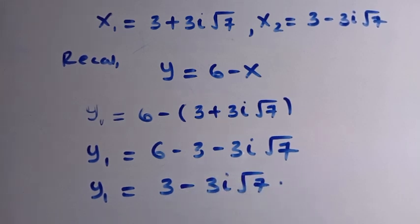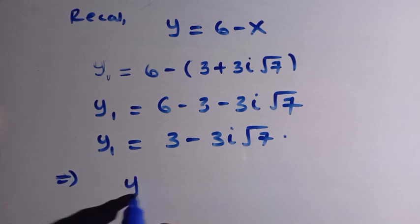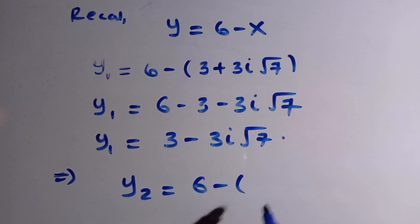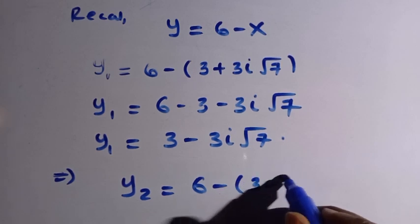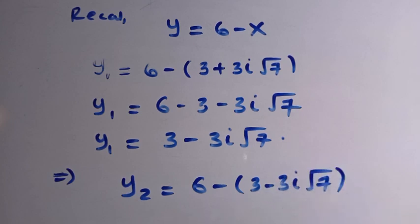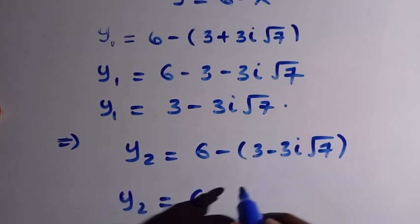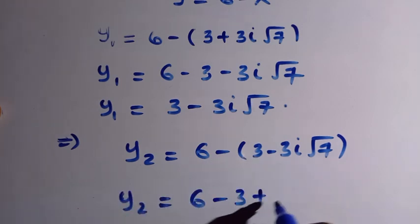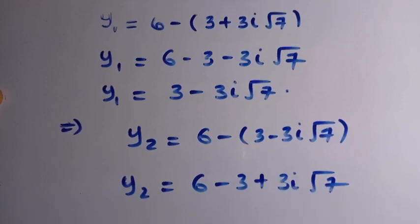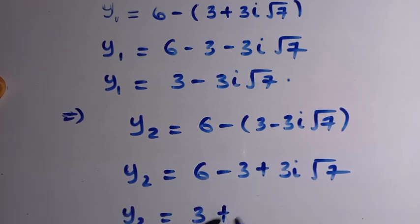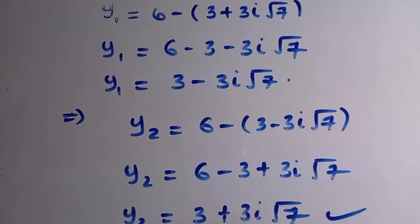We also consider x₂ and substitute into y. So y₂ equals 6 minus (3 minus 3i root 7). When we open the bracket, we have 6 minus 3 plus 3i root 7, which gives y₂ equals 3 plus 3i root 7. So if x₂ equals 3 minus 3i root 7, then y₂ equals 3 plus 3i root 7.